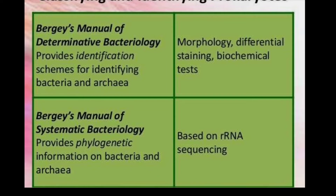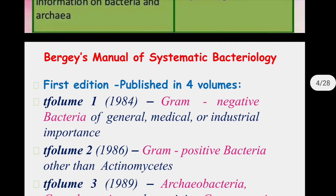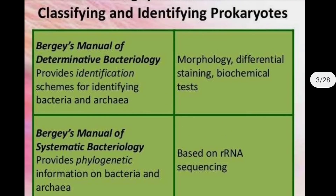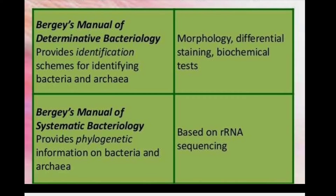Systematic Bacteriology provides phylogenetic information on bacteria and archaea, which is not based on morphology or any kind of biochemical characteristics. Determinative Bacteriology is based on morphology, differential staining, and biochemical tests, whereas Systematic Bacteriology is based on RNA sequencing.